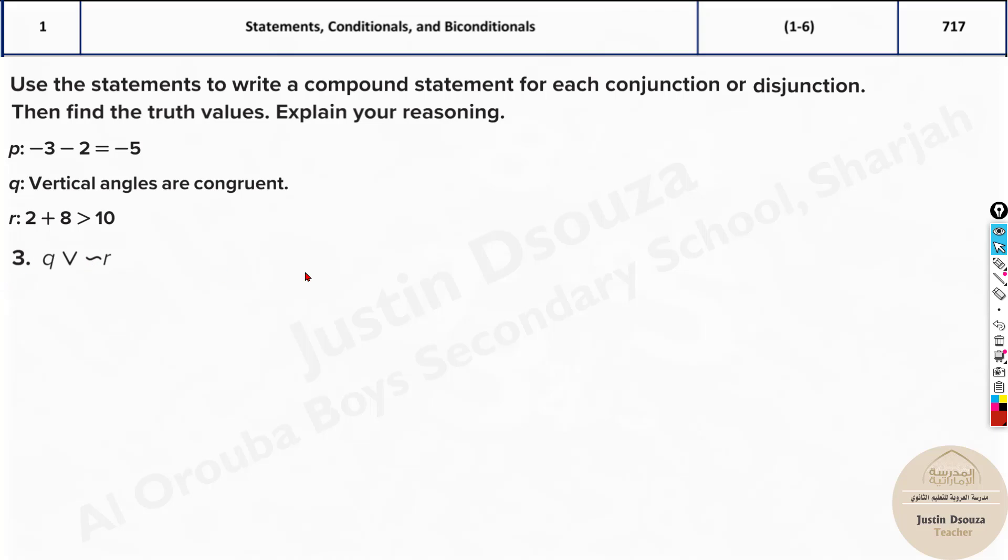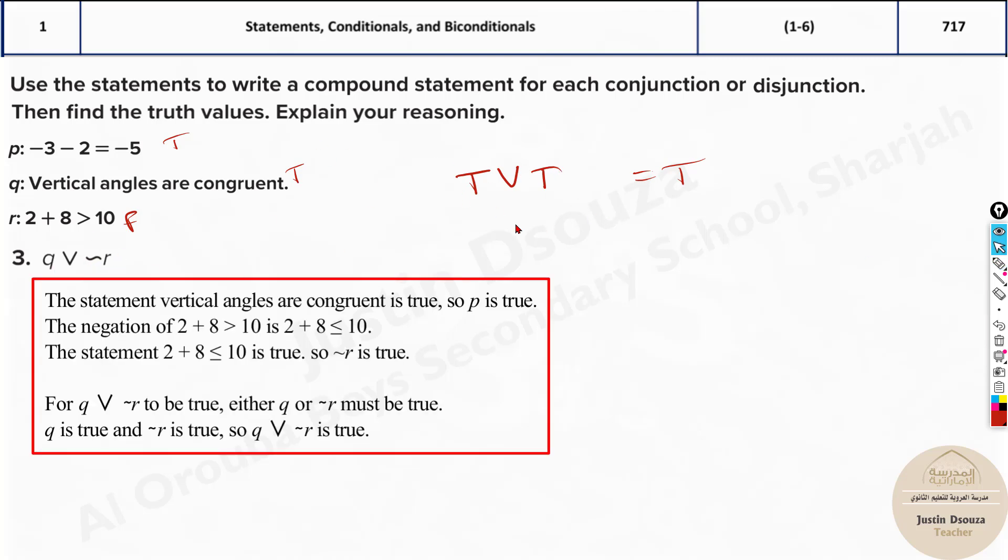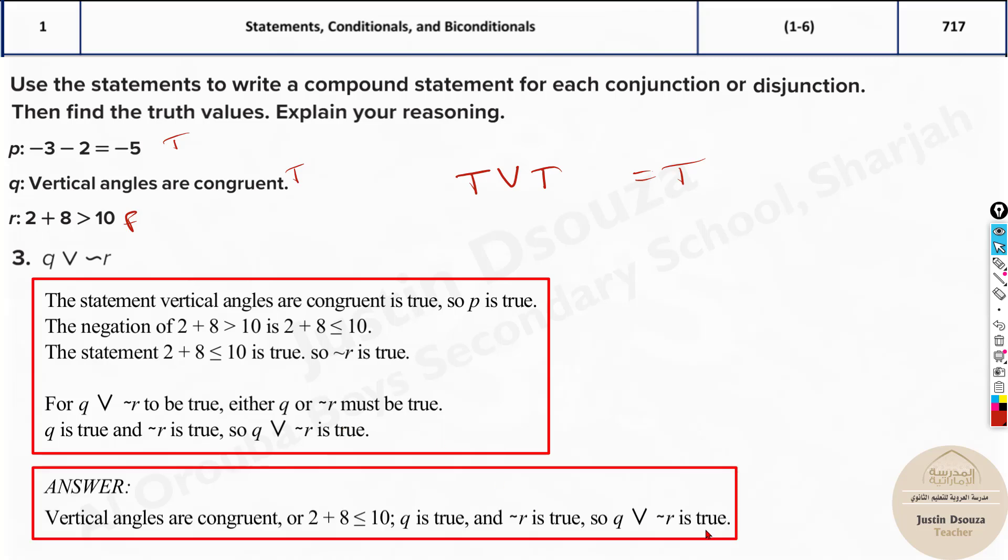Now over here, this one over here is OR statement. So and they have told negation. Let's just quickly do it. We know Q is true, okay? Or what about negation of R? This was false, right? Initially, this is true, true. This is false. So opposite of false is true. So this will be true itself. Because any one is true over here, this would have been true. But over here, both are true. So it is true. So you can see that's the answer.